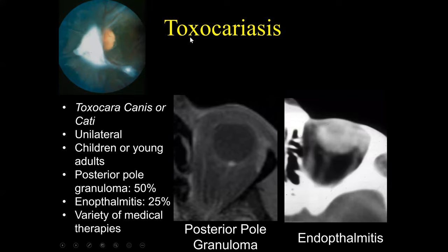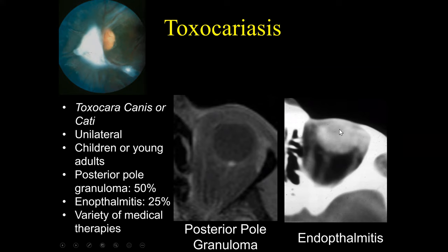Other causes of leukocoria include infections such as toxocariasis. Toxocariasis is often unilateral and associated with pets, specifically cats. It can produce a small posterior pole granuloma, which can result in leukocoria, and if not completely treated, it can result in chronic endophthalmitis — an infection involving the globe. If that infection is never treated, it results in a chronic shrunken globe, essentially the dead eye and end result of an untreated infection.